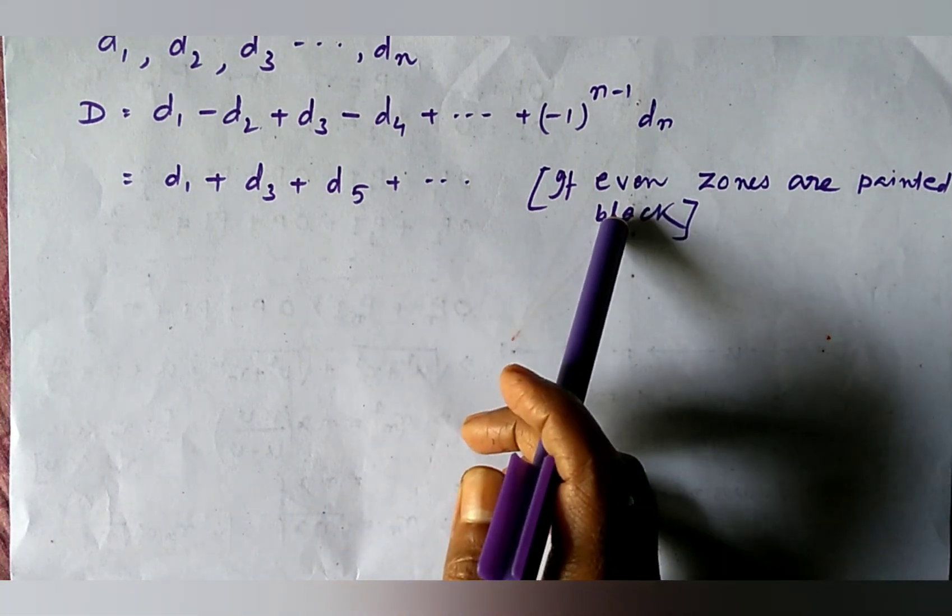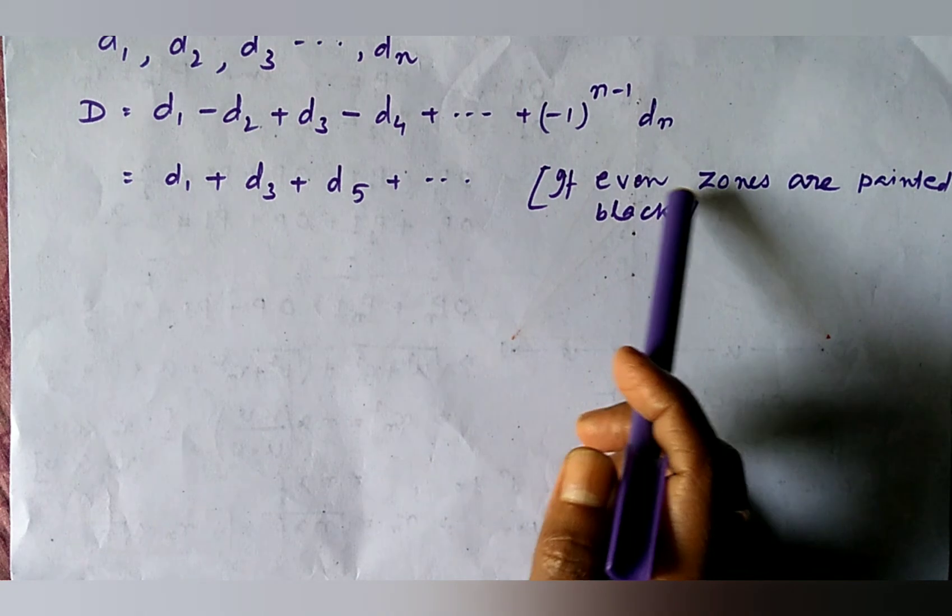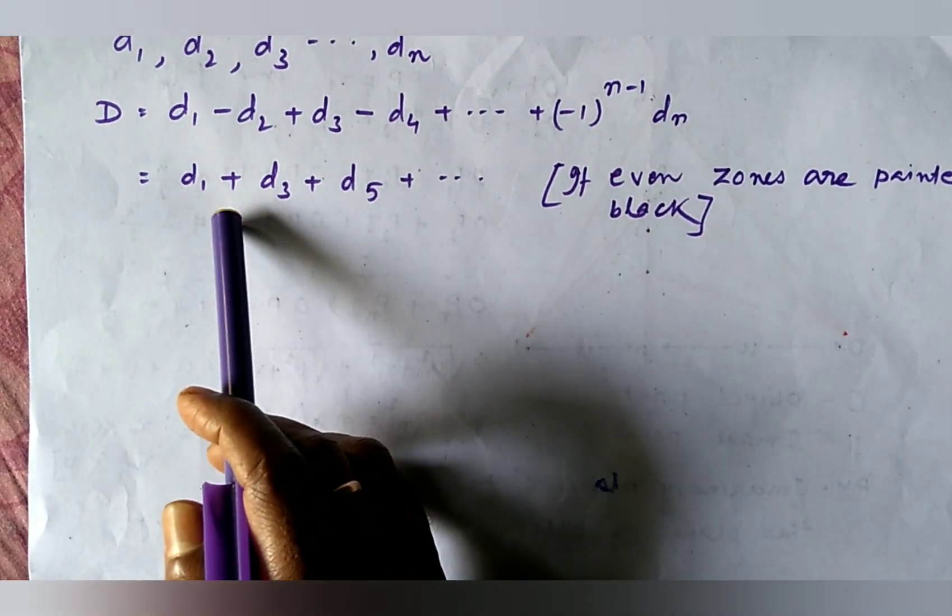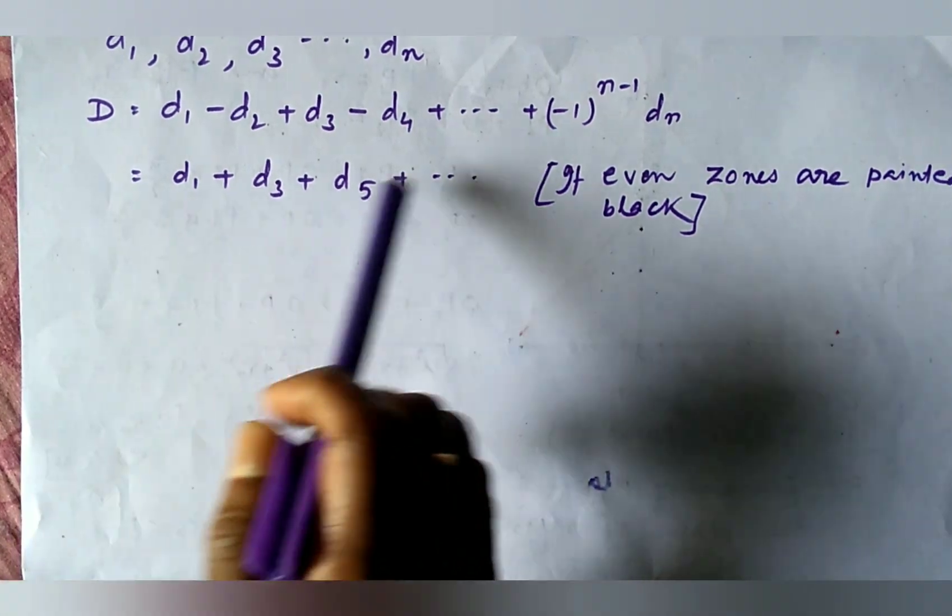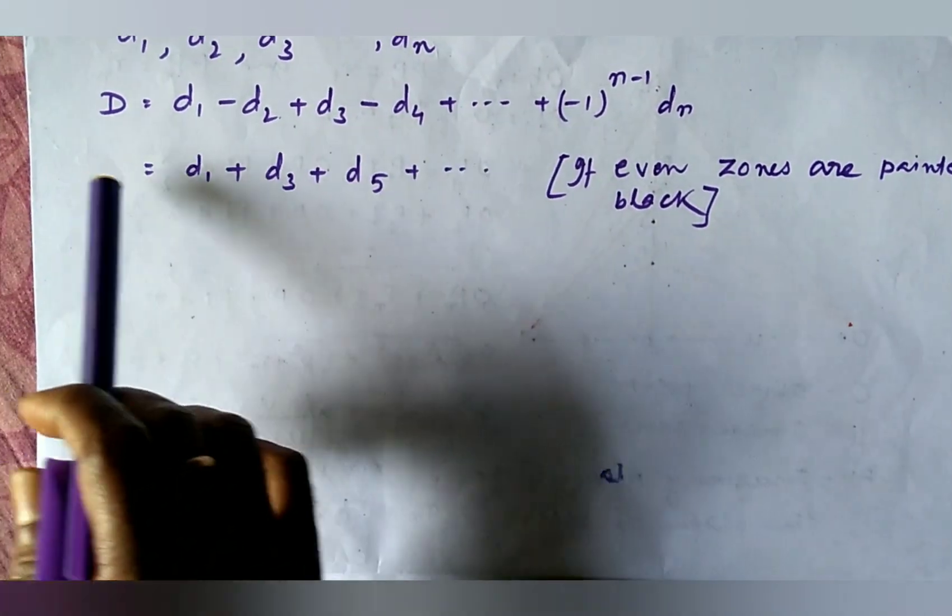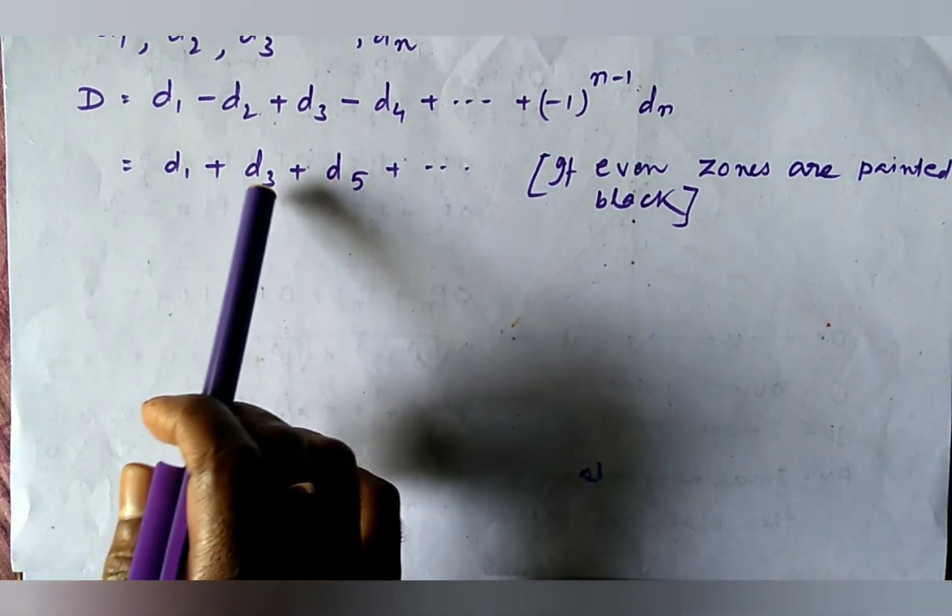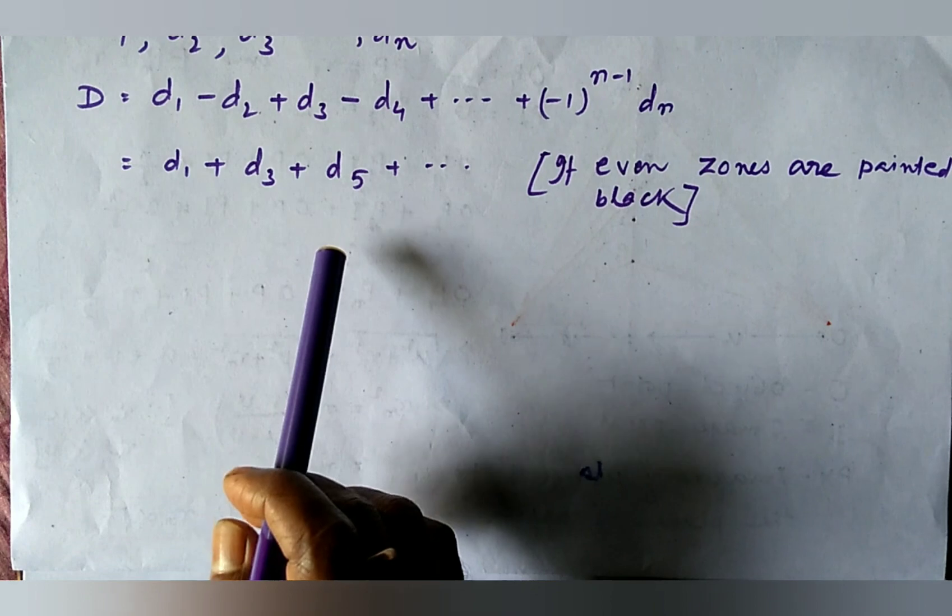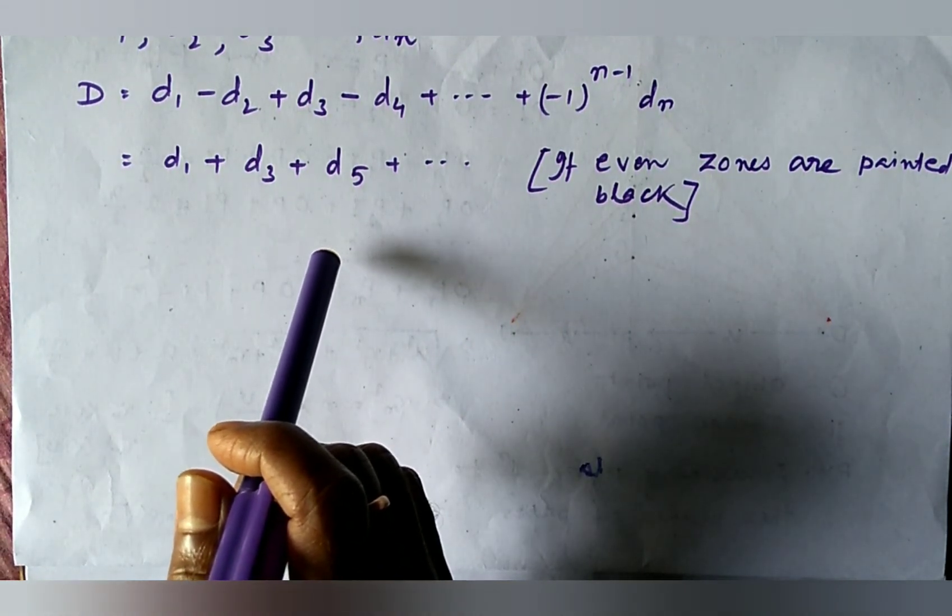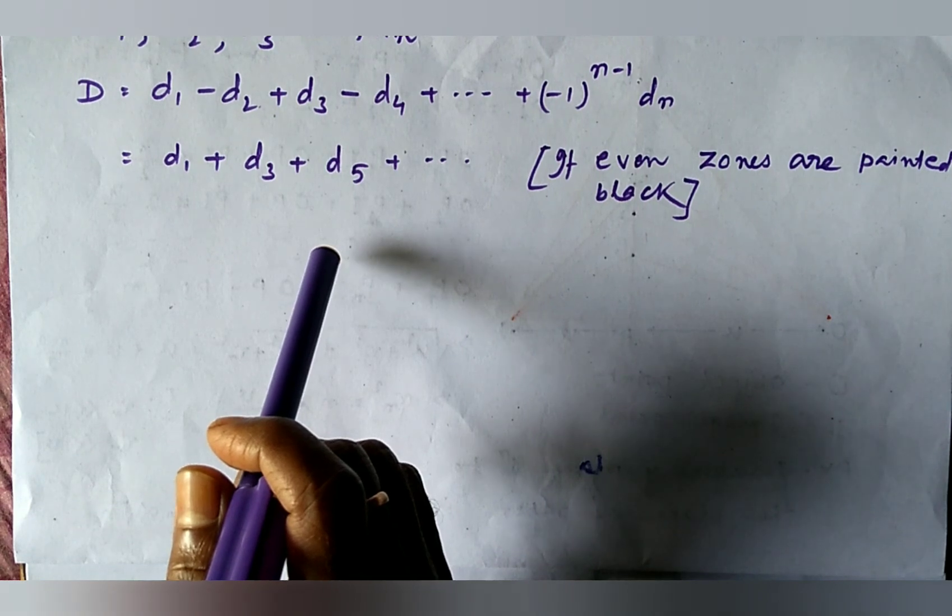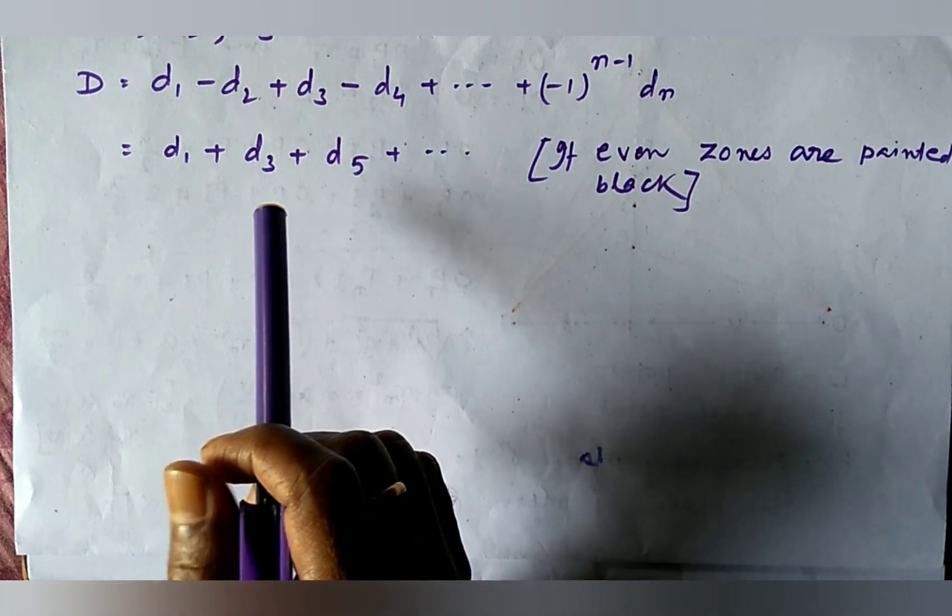And if we block the alternate zones here we block the even zones we may get the resultant amplitudes in this form that is D equal to D1 plus D3 plus D5. So, hence the resultant intensity at I will be greatly increased. Thus, we get a sharply focused image at I by the zone plate of the object O.